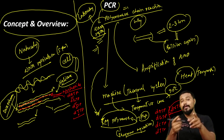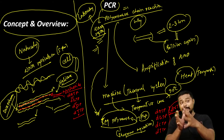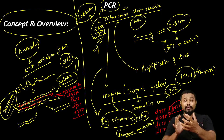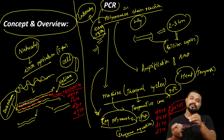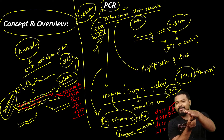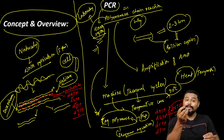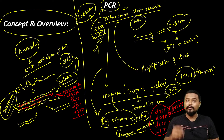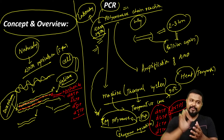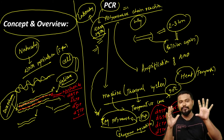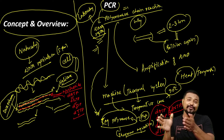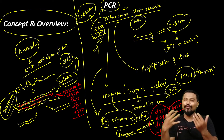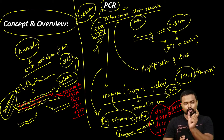In normal cells, helicase separates the double-stranded DNA into single strands. But in PCR, we use heat instead of helicase, because we apply very high temperature to denature and make the DNA single-stranded. So in PCR, heat denatures the double-stranded DNA into single strands, and then new double-stranded DNA is synthesized using dNTPs. We need to mimic these conditions in the laboratory.